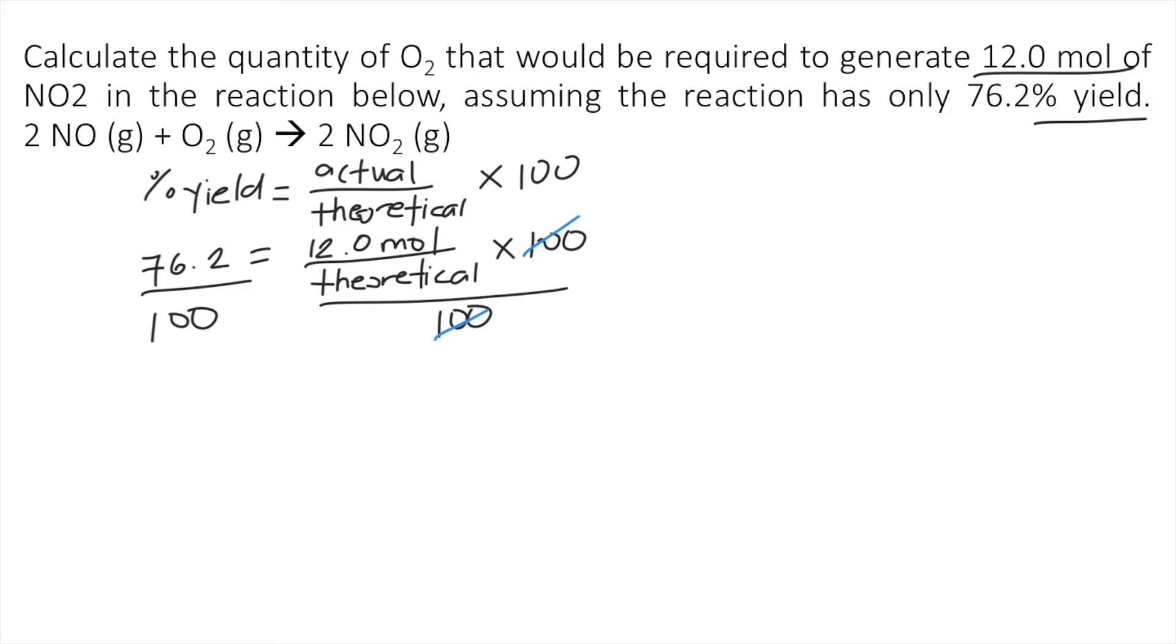So on the right side, we have now 12.0 moles divided by theoretical yield. And on the left side, we have 76.2 divided by 100, which is equal to 0.762.